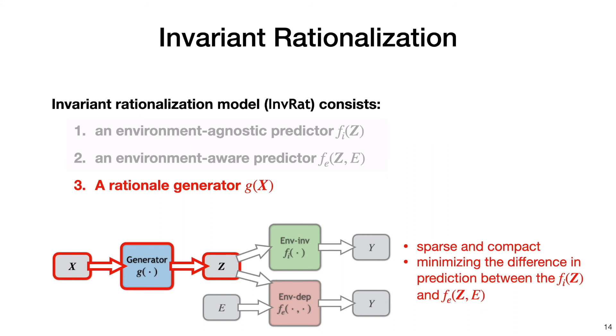In addition to invariance, the generator should also maintain a good performance of the environment-agnostic predictor and to ensure a sparse and continuous selection in order to satisfy the other two requirements.